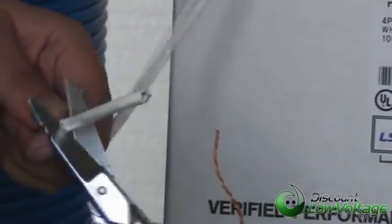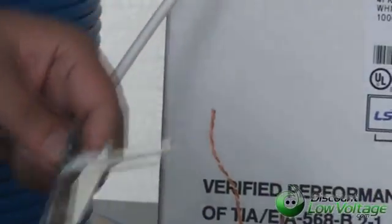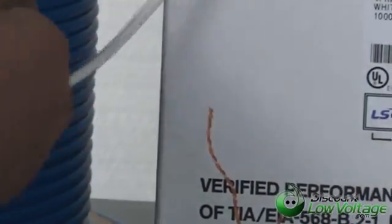Now let's see what the Category 6 looks like underneath the jacket here. Cat 6 supports speeds of 10 gig up to 55 meters.